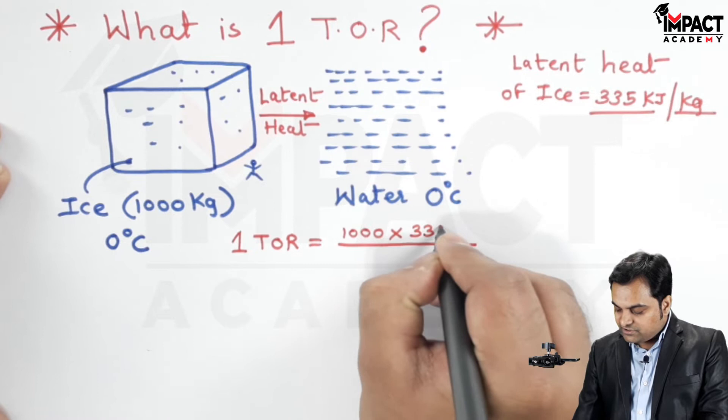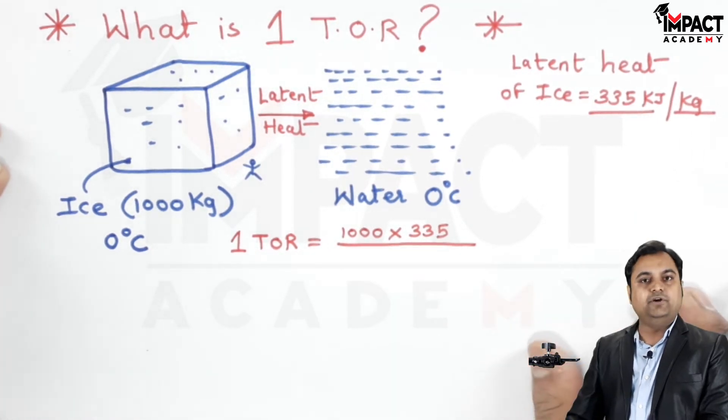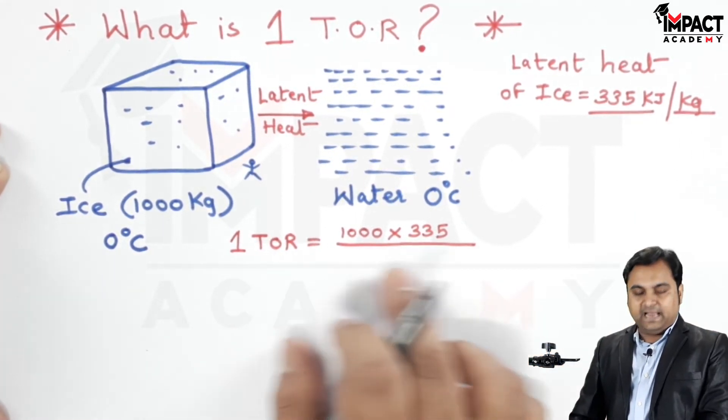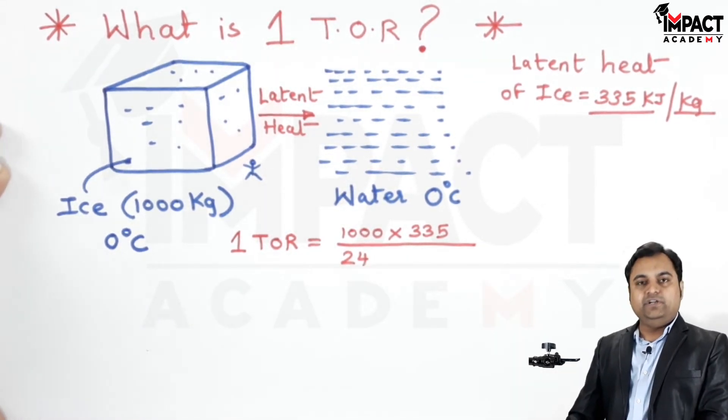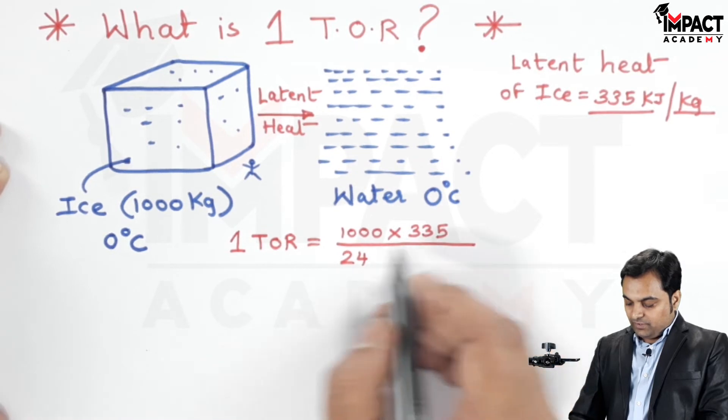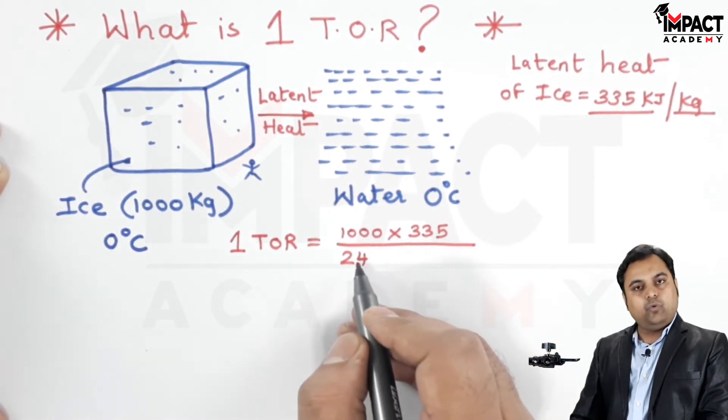So here the mass is 1000, so it would be for 1000 kg into the heat supplied which is 335 for the uniform melting of this ice, and the time taken is 24 hours. So dividing by 24 will give us the uniform melting for one hour.